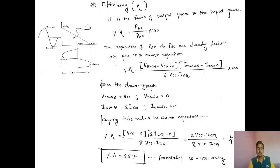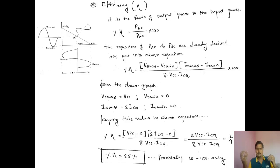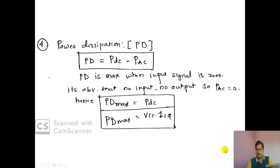Theoretically, the efficiency is 25%. Practically, if you mount that circuit on a breadboard, you will get only 10 to 15%. This is about efficiency. So far we have seen how much input power we have taken, how much output power we have generated, and what the efficiency is.